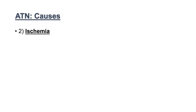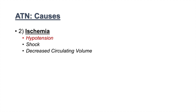The second main category of causes of ATN is ischemic injury. Most of it has to do with hypotension — when blood pressure is too low, it leads to decreased blood and volume delivery to the kidneys, causing ischemia. This can present as shock. Decreased circulating blood volume has the same effect, such as from hemorrhage, skin fluid losses, GI losses, or renal losses — anything causing fluid loss can lead to ischemic injury of the renal tubules.